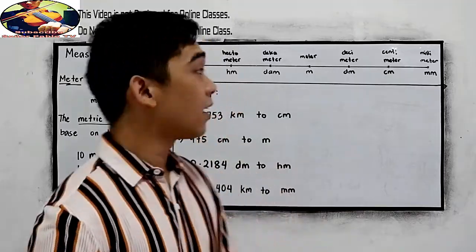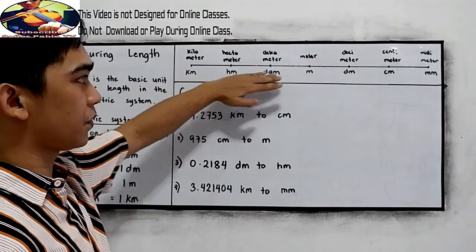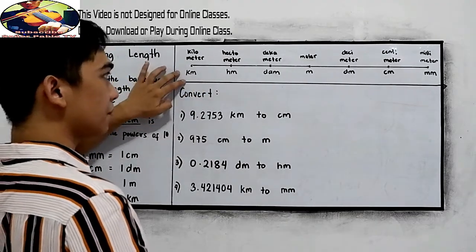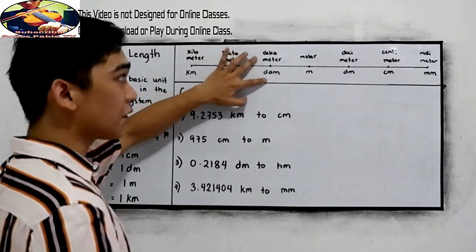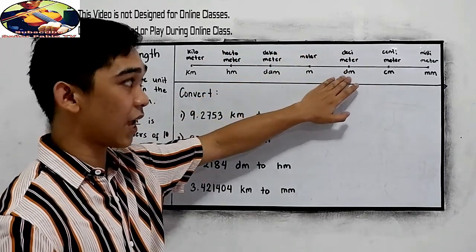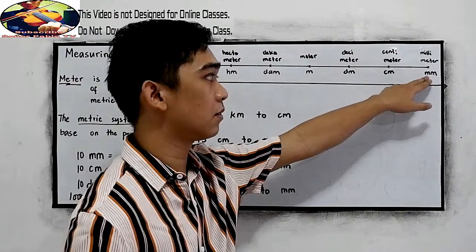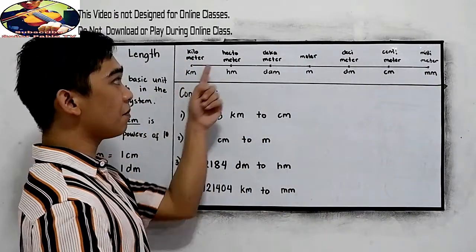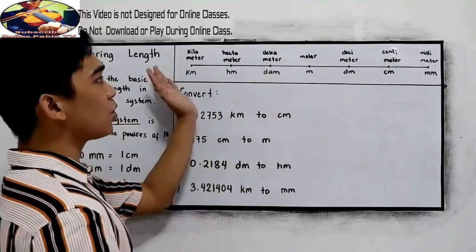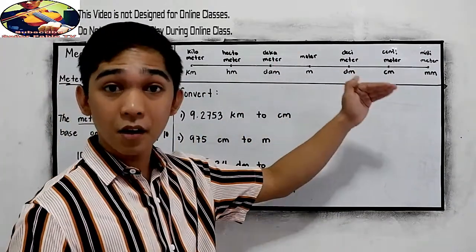To better understand, let's have this metric system table. We have here the kilometer, hectometer, decameter, meter, decimeter, centimeter, and millimeter. We are going to use this to easily convert a number to the desired unit.